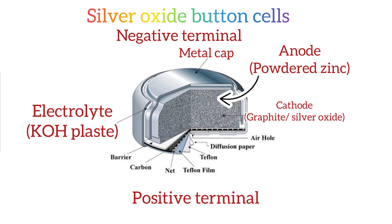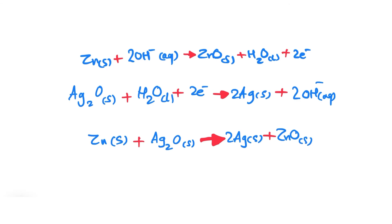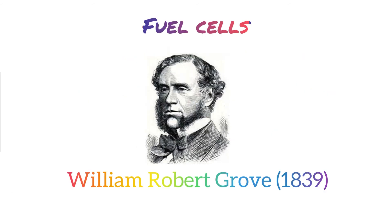However, instead of manganese dioxide at the cathode, button cells use a mixture of silver oxide and graphite. Unlike alkaline batteries, when zinc and hydroxide ions react, they produce zinc oxide, water, and two electrons. The overall reaction equation for this type of button cell shows that, unlike their small appearance, button cells are more stable and have the ability to generate currents much higher than alkaline batteries over a long period of time.